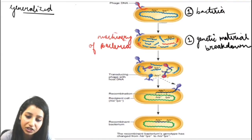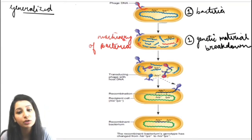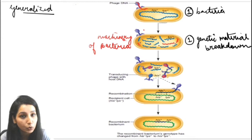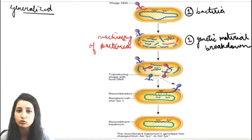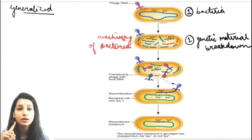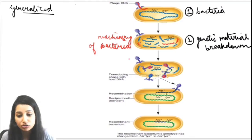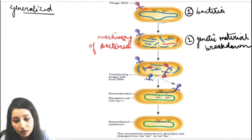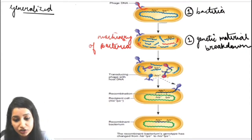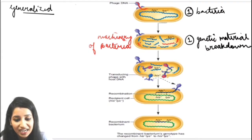The phage will use the machinery of the bacteria — it will use the ribosomes, which are responsible for creating proteins. So the phage will make its own proteins and many copies. As a result, a number of copies of the bacterial phage are formed inside this bacterium.